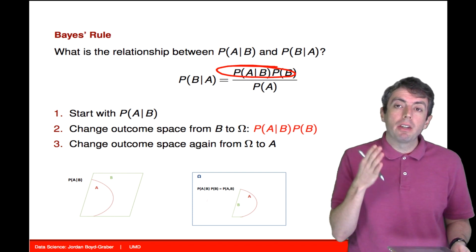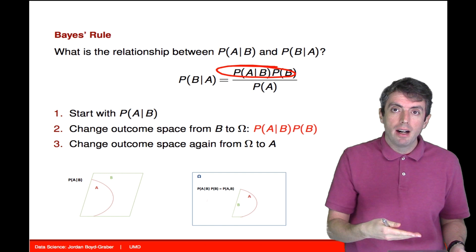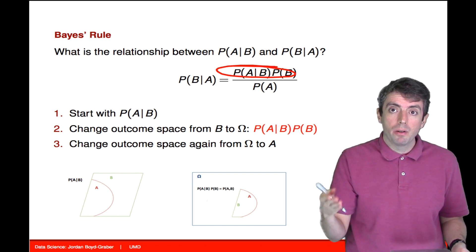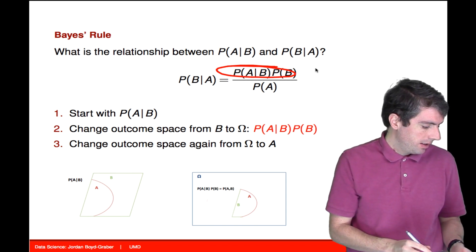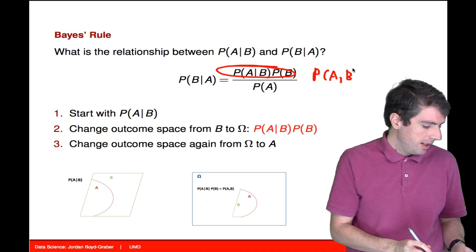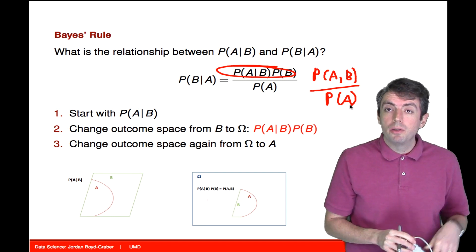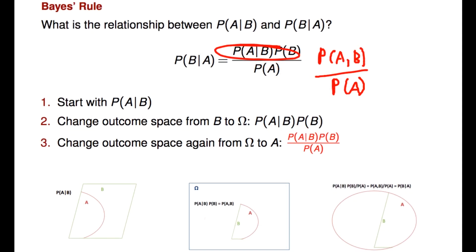But this is now the joint distribution, but we actually want the conditional distribution of probability of B given A. So to do that, you take the joint distribution of A comma B and divide that by the probability of A. And so once you do that, we have back the probability of B given A.